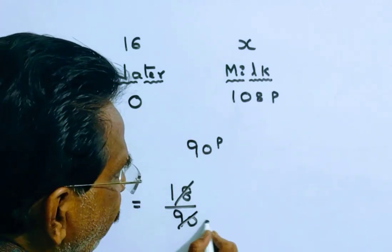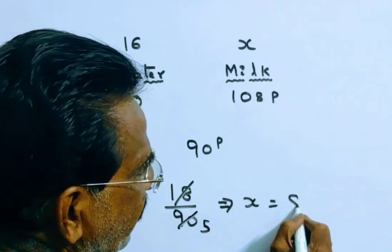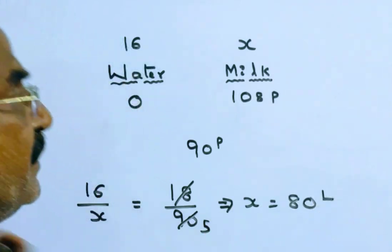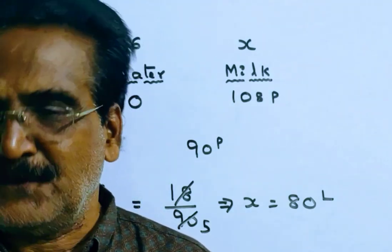So it implies x is equal to 80 liters. This is the quantity of milk in the original mixture. Thank you.